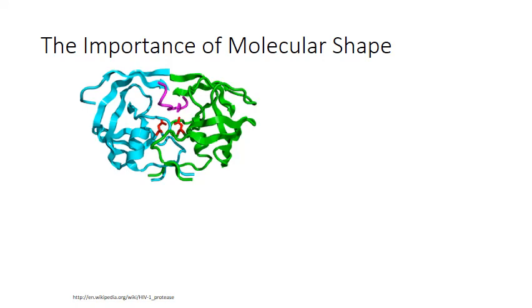So when HIV infects a host cell, it transcribes its viral RNA into DNA that is then incorporated into the DNA of the host cell. The host cell is used to make viral proteins that then infect other host cells and spread the virus.